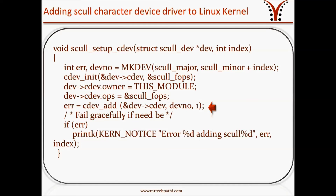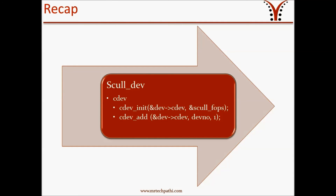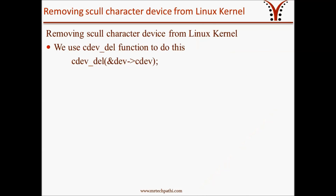Finally, we use cdev_add, passing three arguments: the address of the skull cdev structure initialized above, the device number carrying the major and minor number of the skull device, and a count value of 1, which tells the kernel that there is only one device associated with these device numbers. We check the return value of cdev_add and print debug output accordingly. To recap: we walked through a code snippet that initializes the cdev structure as part of skull_dev, and makes calls to cdev_init and cdev_add to add the skull device to the Linux kernel.